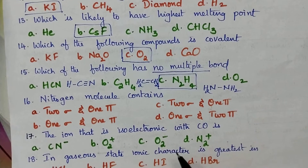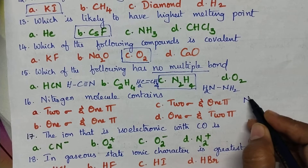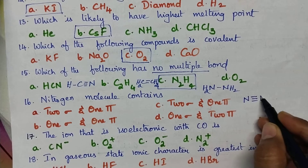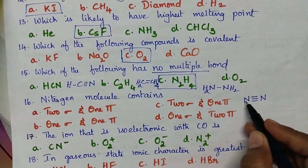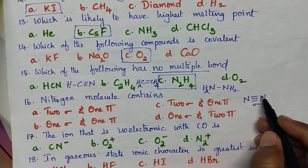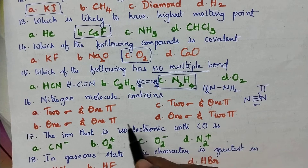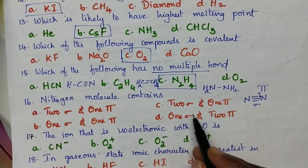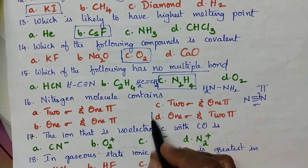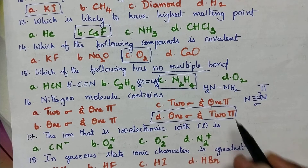Nitrogen molecule contains: we have to consider the structural formula. A triple bond is present between the two nitrogen atoms — the first one is a sigma bond and the other two bonds are pi bonds. So the nitrogen molecule contains one sigma and two pi bonds. Option D is the right answer.